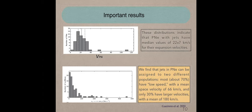The important results of this work is the next. In the first graphic, we have the expansion velocity of the planetary nebulae. In the y-axis, the number of planetary nebulae with this expansion velocity. This distribution indicates that planetary nebulae with jet have a median value of 22 kilometers per second for the expansion velocity. You can observe the median in this graphic.